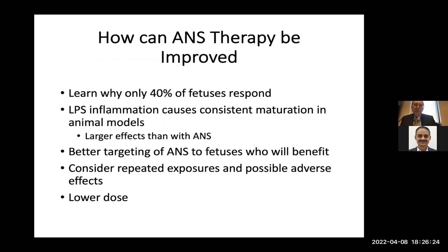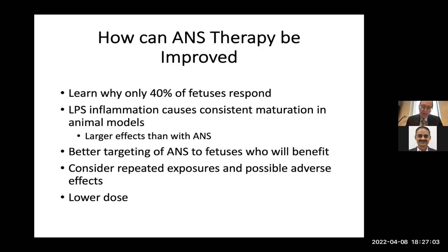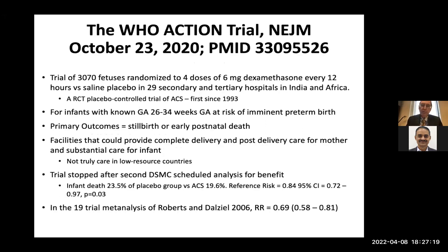One thing nobody mentions when consenting a mother for steroids is that only about 40 percent of fetuses actually respond. Lung inflammation causes a more consistent lung maturation in animal models than antenatal steroids. It's better to target antenatal steroids to those who will benefit, consider repeated doses as possible adverse effects, and lower doses are important. We don't have lower-dose data in humans, but a WHO and Gates Foundation trial using a lower-dose strategy is being started in India, Africa, and Pakistan.